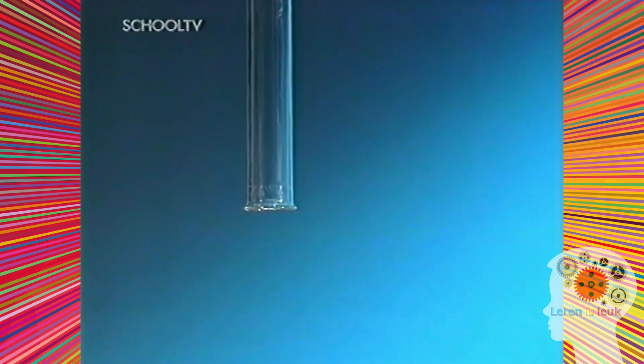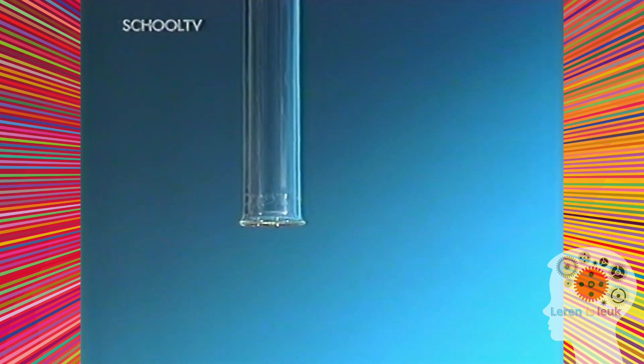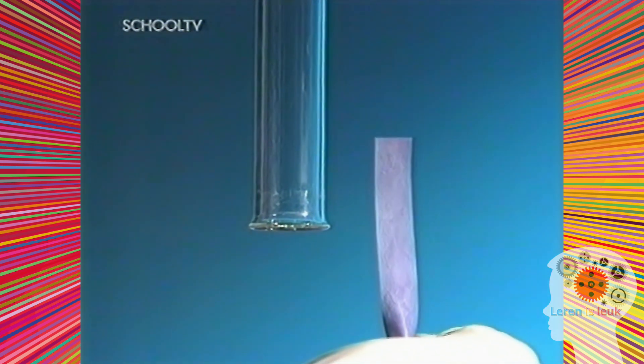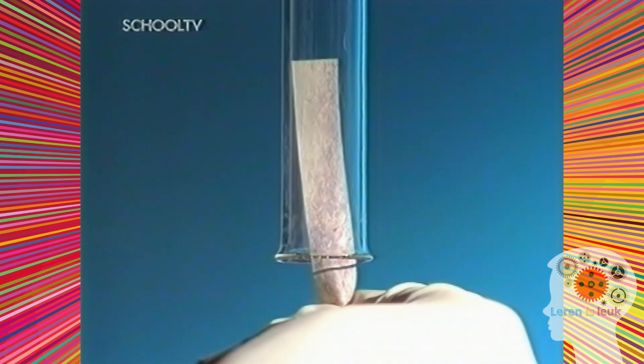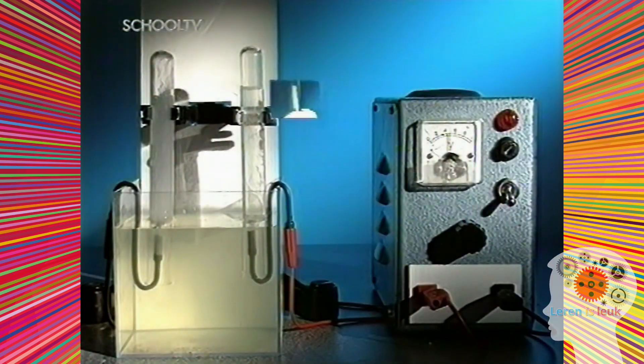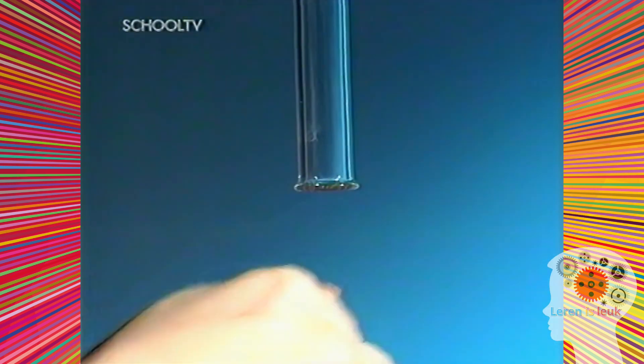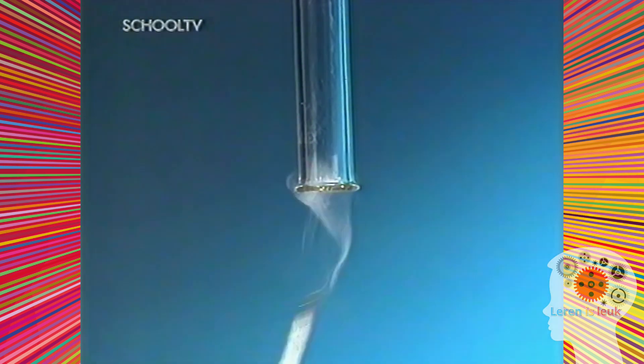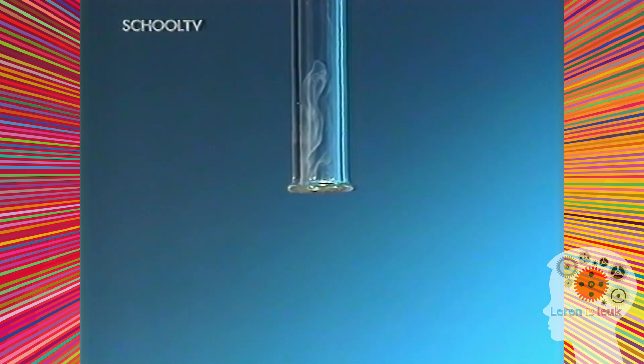Het gas bij de positieve elektroden wordt getest met een vochtig blauw lakmoespapiertje. Dat wordt rood en verbleekt dan snel tot wit. Dat is chloorgas. Het gas bij de negatieve elektroden wordt getest met een brandende lucifer. Het ploft, het bewijs dat dit waterstof is.